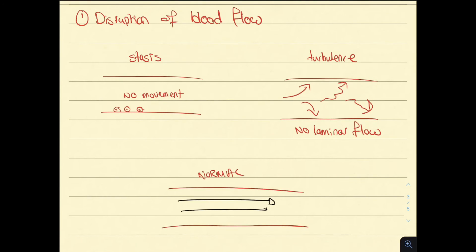Comparing this to normal circumstances, normally blood flow is laminar, as we can see in this picture.